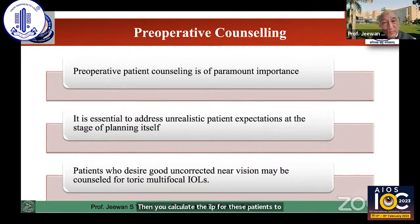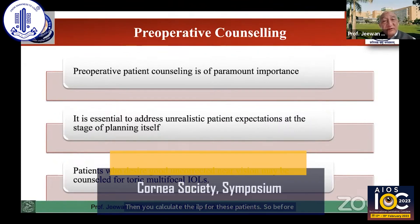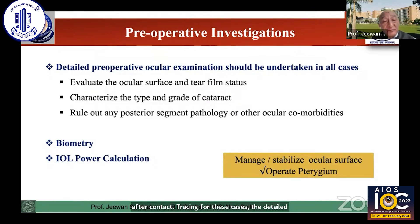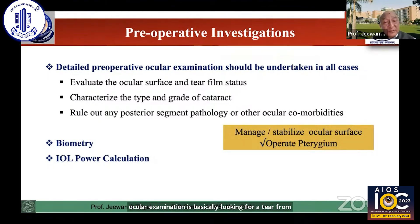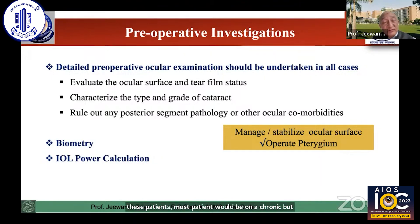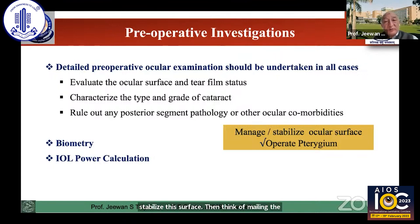So before we jump for surgery, it is very important for us to understand the patient's need. And accordingly, we should counsel the patient for surgery, especially if you are doing an intraocular surgery after a corneal transplant surgery. So a detailed ocular examination, especially looking for tear film status, which is very important after a corneal procedure. Look for the type of cataract, especially the grade of cataract, the anterior segment anatomy, the depth of anterior chamber, the peripheral anterior synechiae, and glaucoma may be important for these patients. Most patients would be on chronic topical medications, and if they have glaucoma medication on, they surprisingly definitely have poor surface. So we have to stabilize the surface, then think of measuring the corneal parameters, which will give you correct parameters for IOL power calculation for these patients.